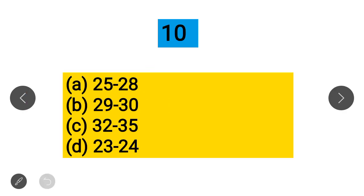Question 10: Which of the following articles contain the right to religious freedom? Option A: Articles 25 to 28, Option B: Articles 29 to 30, Option C: Articles 32 to 35, Option D: Articles 23 to 24. The correct answer is Articles 25 to 28, which deal with the right to religious freedom.